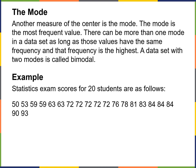There can be more than one mode in a dataset, as long as those values have the same frequency and that frequency is the highest. A dataset with two modes is called bimodal. Here's an example: a statistics exam course for 20 students showing their scores. The lowest score is 50 and the highest score is 93.